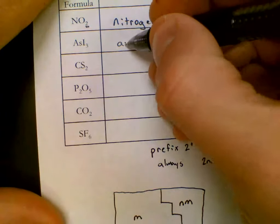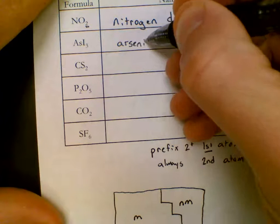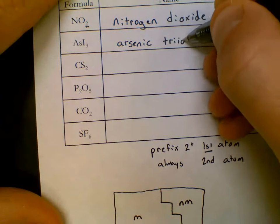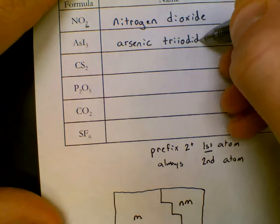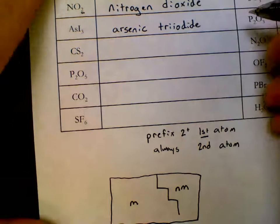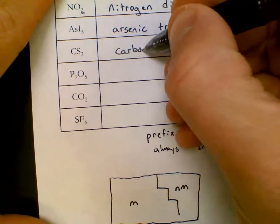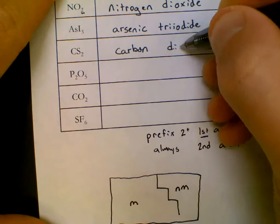As is arsenic, full first name still. Now no prefix because it is a subscript one. Tri for three, iodide. Here is the case where we double up the I. C is carbon, disulfide.